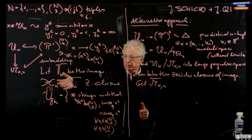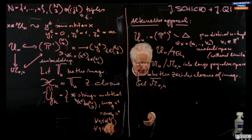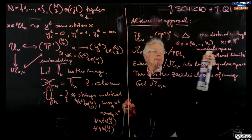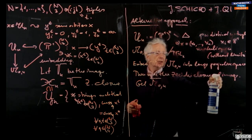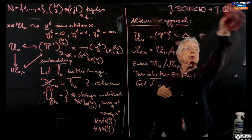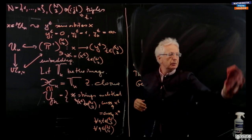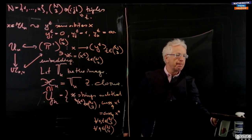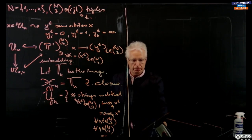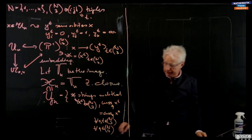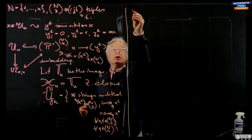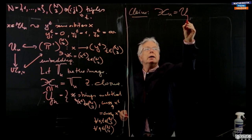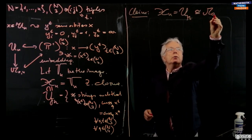Before going there, we will have an excursion to phylogenetic trees. We have already defined our object, and then our claim or theorem is: X_n equals Y_n, isomorphic to M0,n-bar.